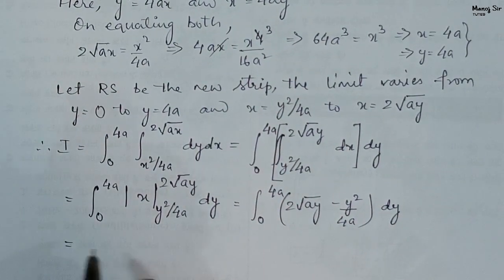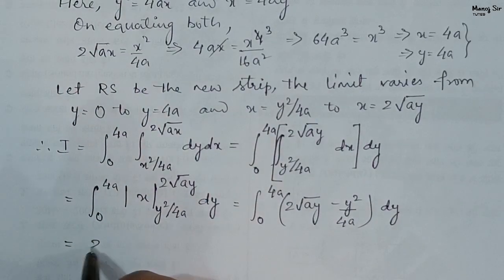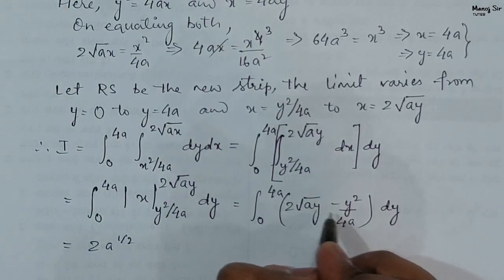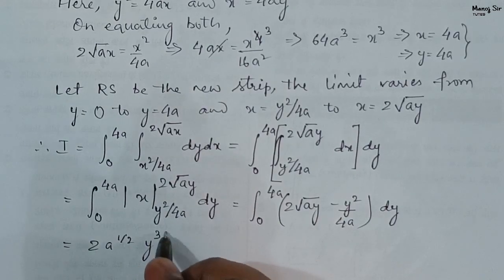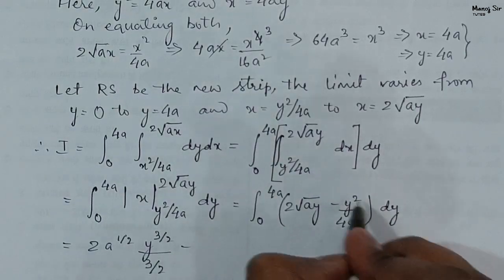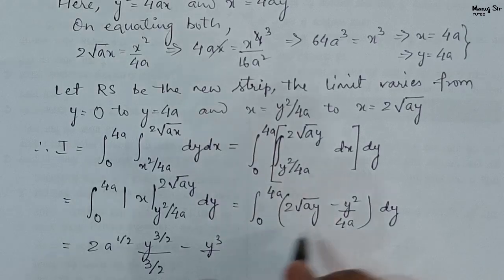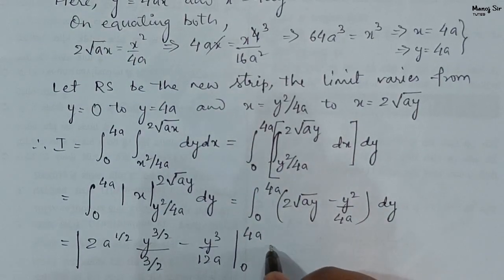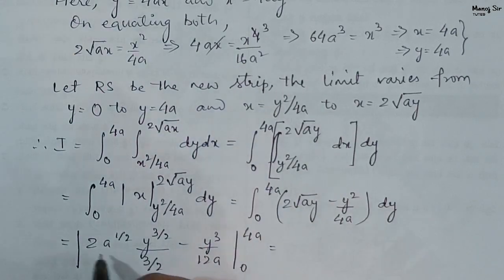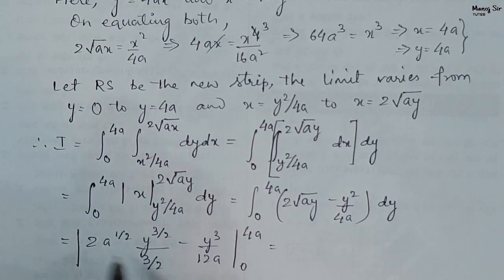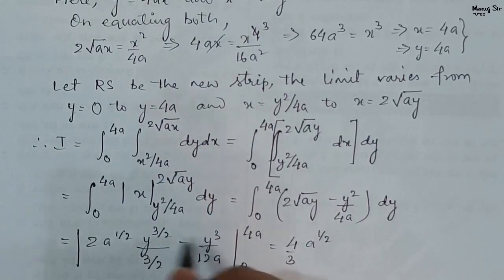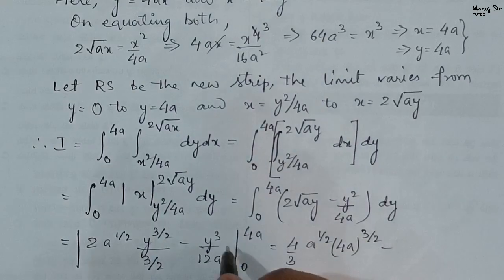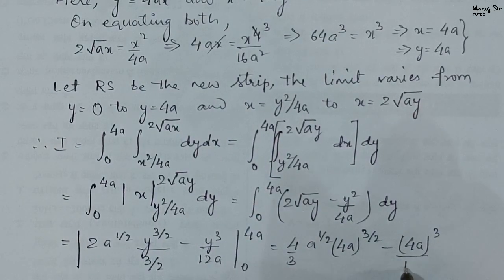Now integrating with respect to y: the term 2·a^{1/2}·y^{1/2} integrates to 2·a^{1/2}·(y^{3/2}) / (3/2), and y² / 4a integrates to y³ / 12a. Evaluating from 0 to 4a: we get (4/3)·a^{1/2}·(4a)^{3/2} − (4a)³ / 12a.